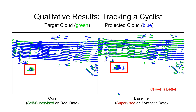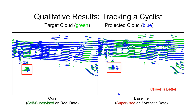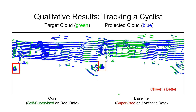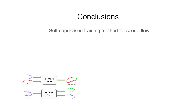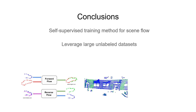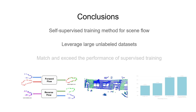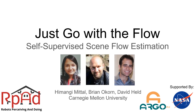As NuScenes contains no scene flow annotations, supervised fine-tuning is not possible. In this talk, we presented a self-supervised method of learning scene flow estimation that is able to leverage large, unannotated datasets, and match and exceed the performance of supervised methods which are restricted to smaller, labeled datasets. Please read our paper for more in-depth information, and thank you for listening.